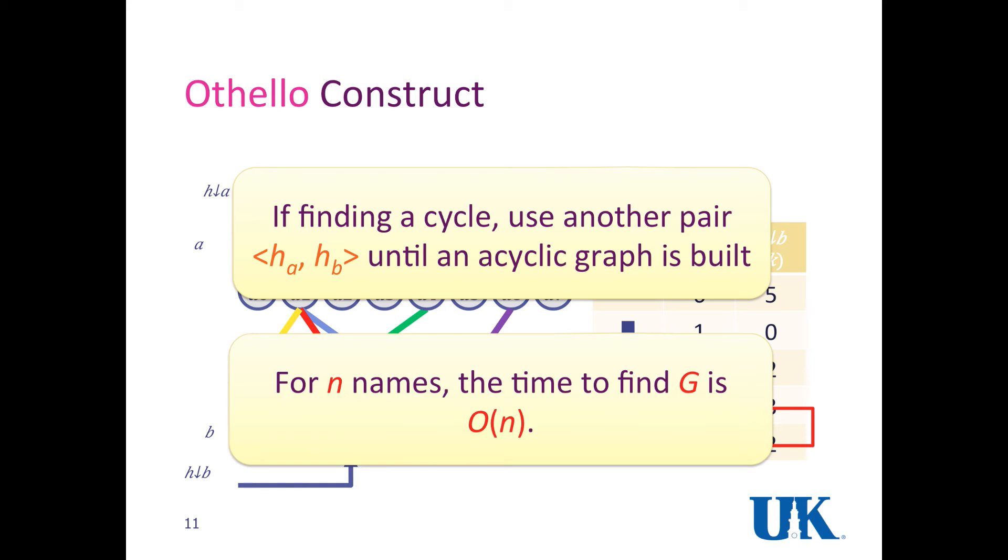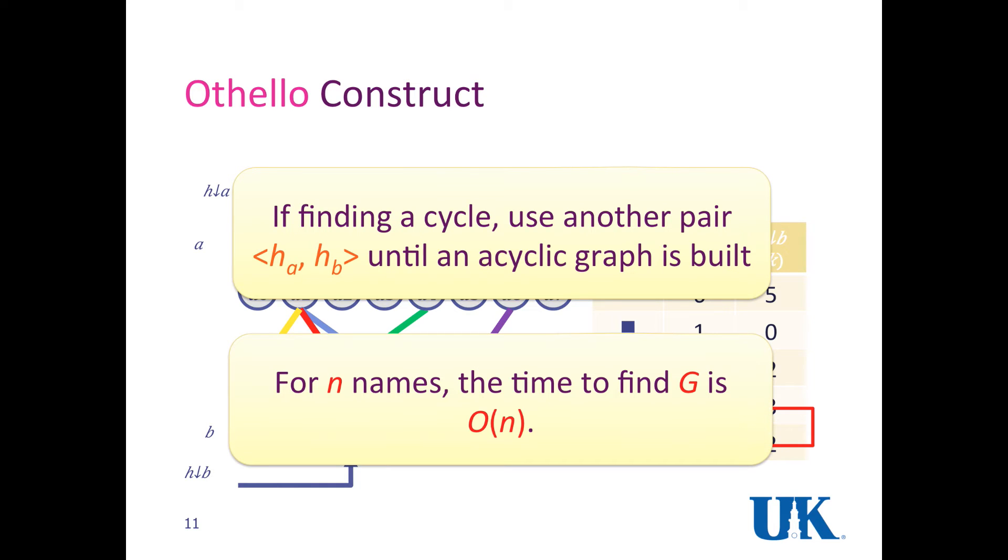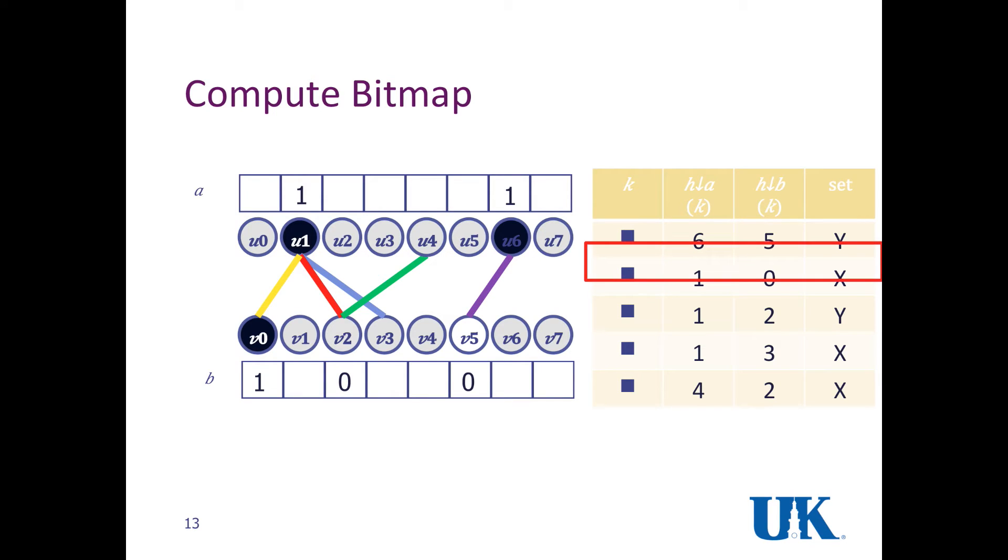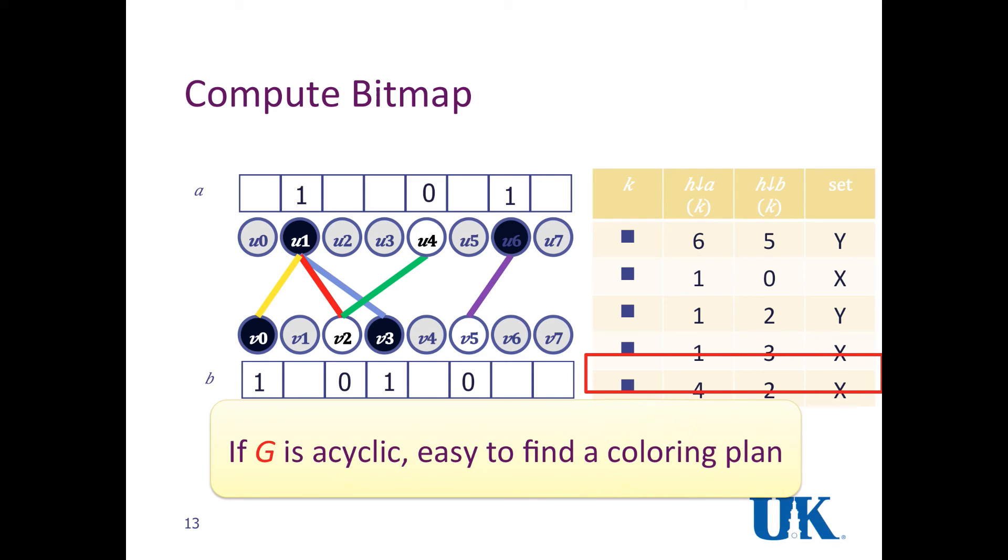However, we proved that for N names, the time to find G is not too complicated. It's just O of N, which is not too large, although we need to replace a lot of hash functions if a cycle occurs. For every name, if this name is in set Y, which means the two bits should be different, we color those two vertices with different colors, one black and one white. For this name, the yellow one, it belongs to set X, so we color the two vertices with the same color, and so on and so forth. If the G is acyclic, it's very easy to find a coloring plan.